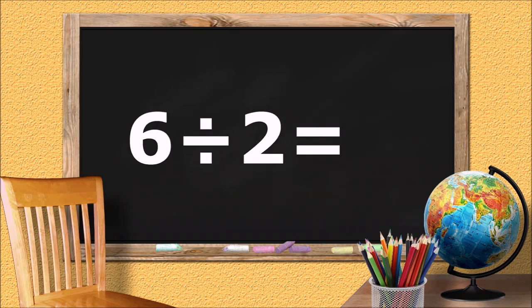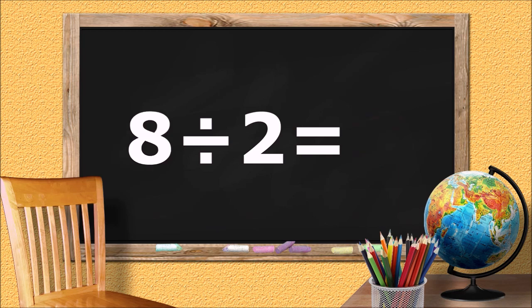Six divided by two equals... three. Eight divided by two equals... four.